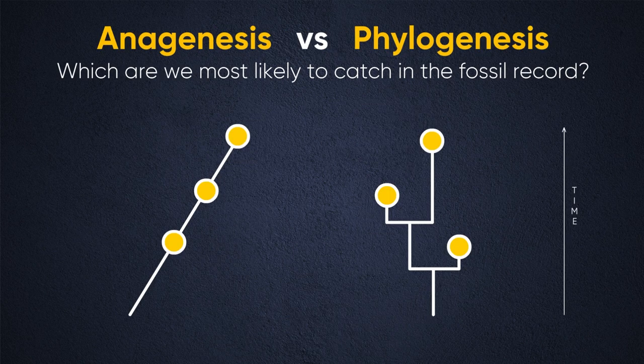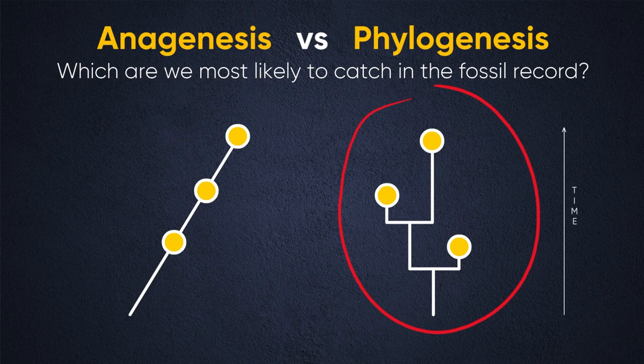Anagenesis versus phylogenesis — which are we most likely to catch in the fossil record? Well, because the fossil record is very spotty, we are most likely to see phylogenesis. When you look at all the human fossils that exist, we can't assume that those fossils are direct ancestors of modern humans. Instead, we assume that they are sister clades — different groups that branched off as humans were evolving.